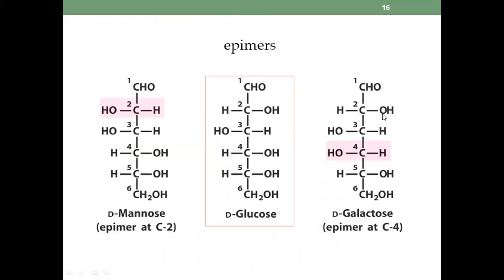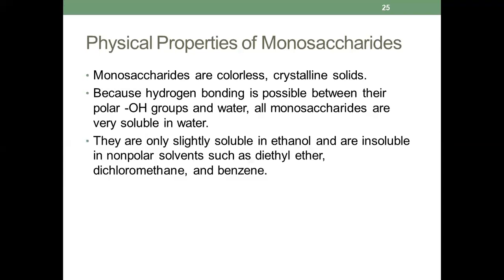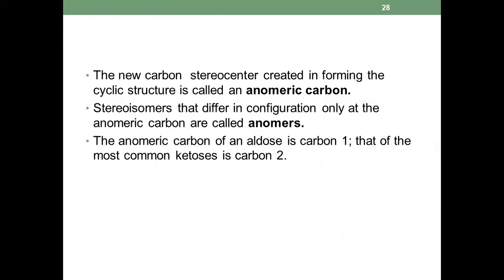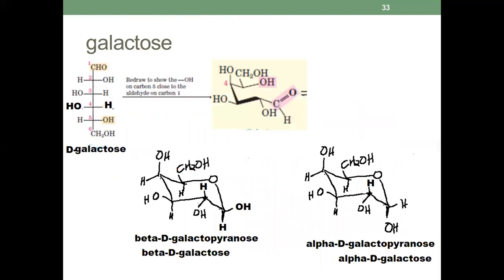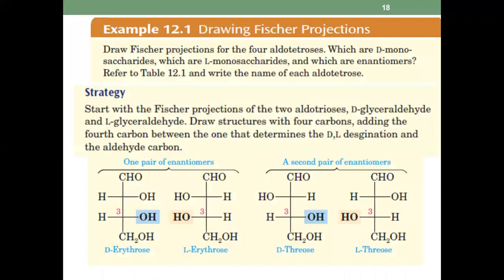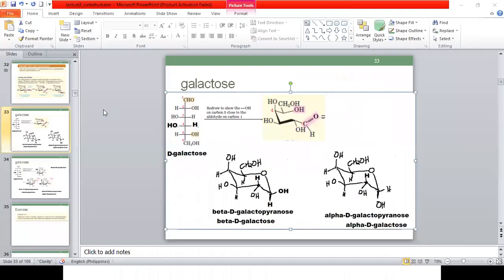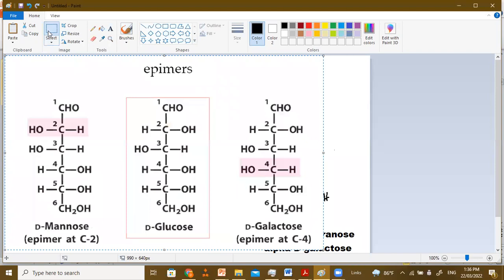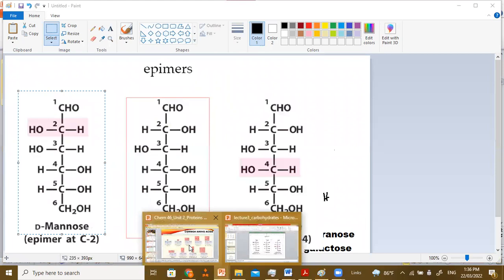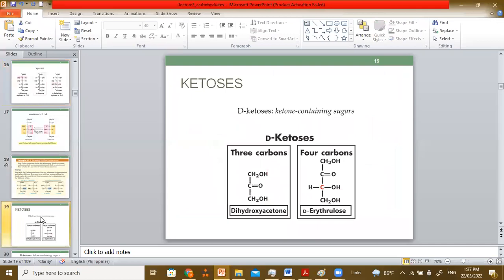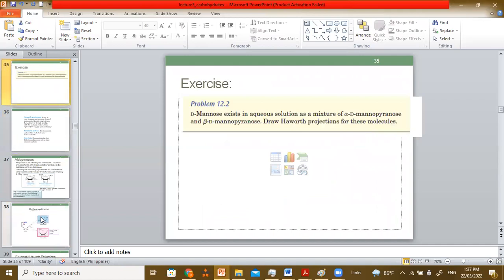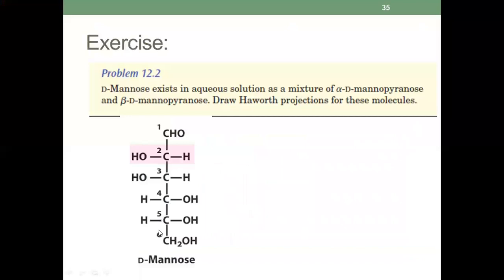So here is your structure for mannose. Instead of galactose which is down, up, up, down, for mannose you have up, up, down — it's very easy. You have your structure — instead of the OH here you have your OH here for mannose. So this is your D-mannose; just have to remember how to draw the pyranose.